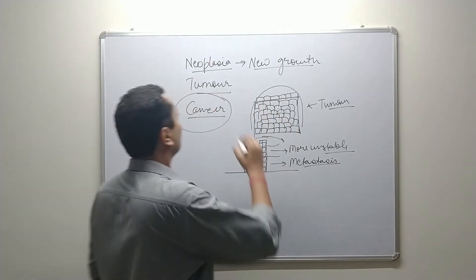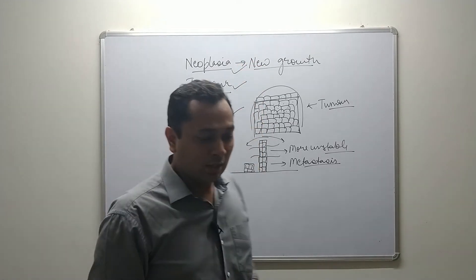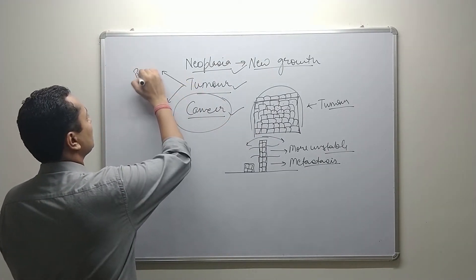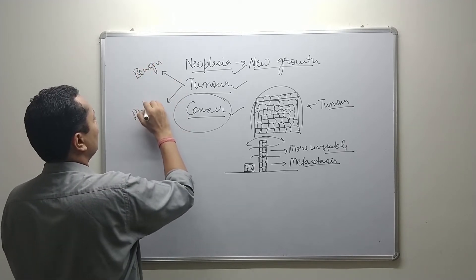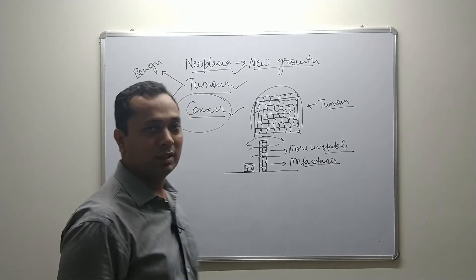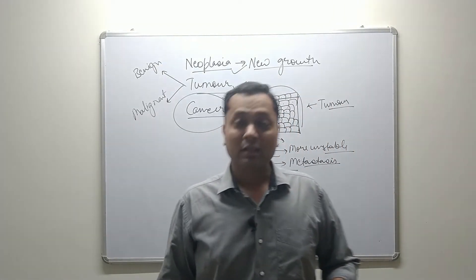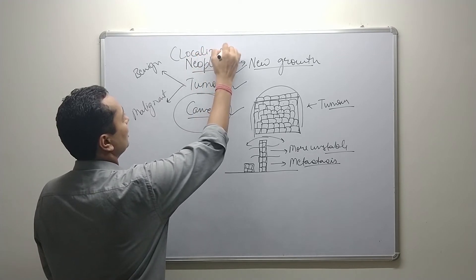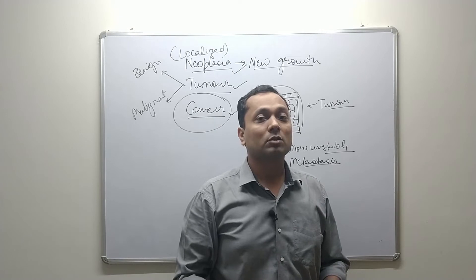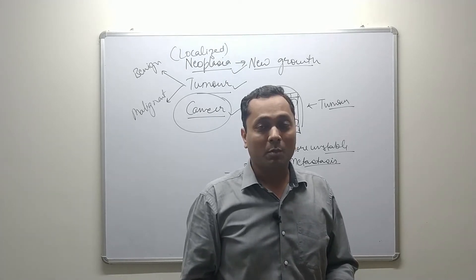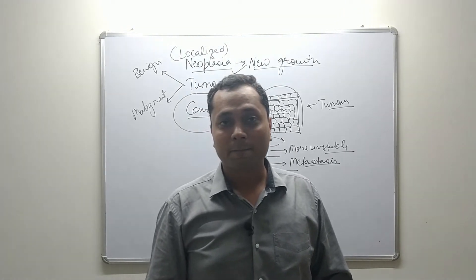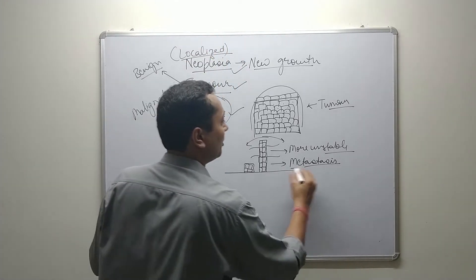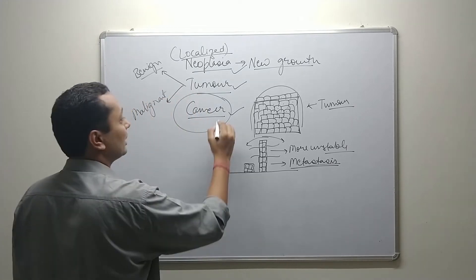So to summarize: neoplasia is new growth of cells, a tumor is the cluster of cells arising from neoplasia, and cancer is the condition where tumor cells can metastasize to other parts of the body. Tumors can be of two types: benign and malignant. Benign tumors are localized — they have not spread everywhere. Benign tumors are not cancerous because they do not metastasize to other parts of the body.